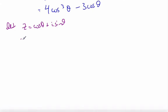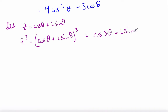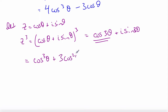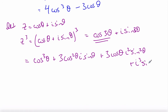I know I'm looking for cosine 3 theta, so I need to introduce a 3 somewhere. If I cube this — cosine theta plus i sine theta to the power 3 — I know by De Moivre's Theorem that's cosine 3 theta plus i sine 3 theta, and the real part is cosine 3 theta. I can also expand this by the Binomial Theorem, which gives cosine cubed theta plus 3 cos squared theta times i sine theta plus 3 cosine theta times i squared sine squared theta plus i cubed sine cubed theta.